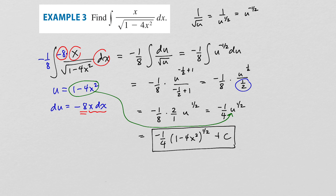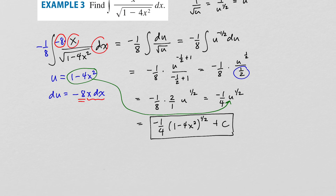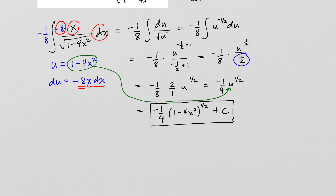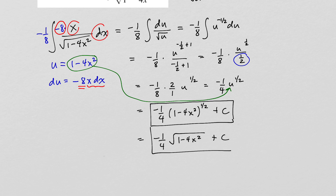You can also rewrite this as a radical: negative one-fourth times the square root of 1 minus 4x squared plus c. Both forms of the answer are acceptable.